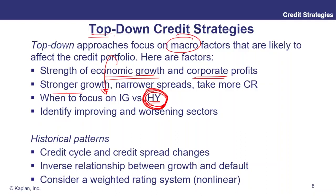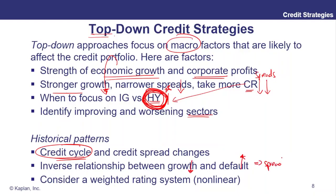Remember, stronger growth means spreads narrow. We move into high yield names, which benefit more from spread contraction — these credit risky names will outperform. We can also do relative value on a sector basis from a top-down aggregate level, much like we discussed the credit cycle in the first reading of this chapter. If we think the economy is going to worsen, we'd generally expect spreads to rise and credit curves to flatten. There's an inverse relationship between growth and default: as growth shrinks, default picks up and credit spreads rise.